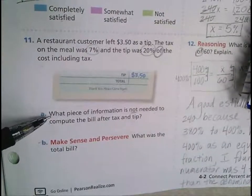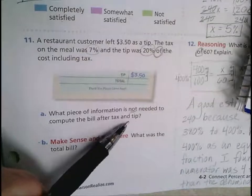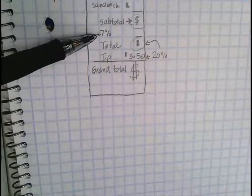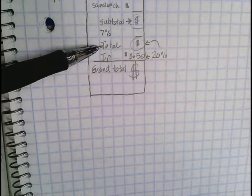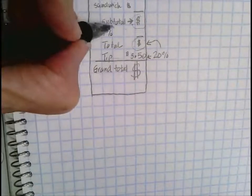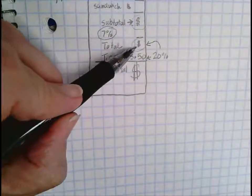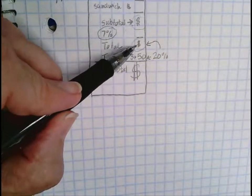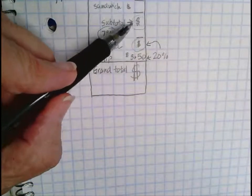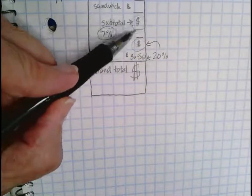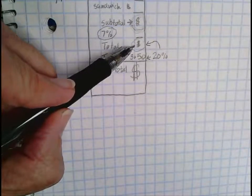What piece of information is not needed to compute the bill after tax and tip? Well, the piece of information I really don't need to know is whatever their sales tax was, because my tip is based on whatever that total was. Sometimes people base the tip on this total. This problem's a little trickier because they want us to base our tip on this total.